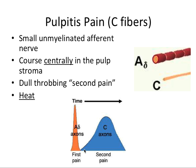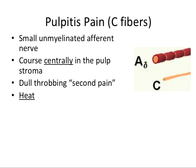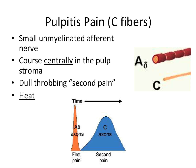Going back — A-delta fibers transmit dentinal pain because they're associated with the pulpo-dentinal complex, where the pulp and dentin meet. Because these fibers course coronally — along the outer border rather than centrally — they're more easily provoked than the C fibers located more centrally. The progression of pulpal inflammation can shift a pain response from first pain transmitted by A-delta axons to second pain transmitted by C axons.